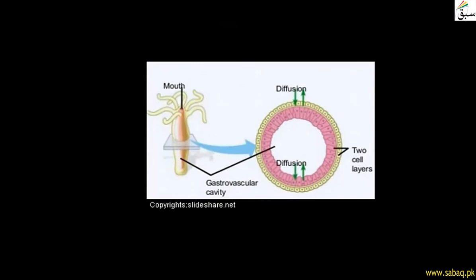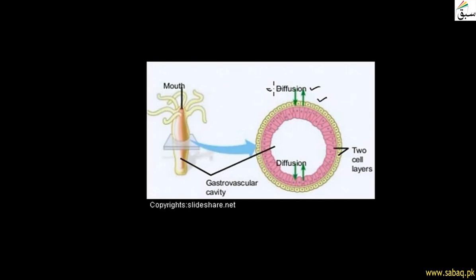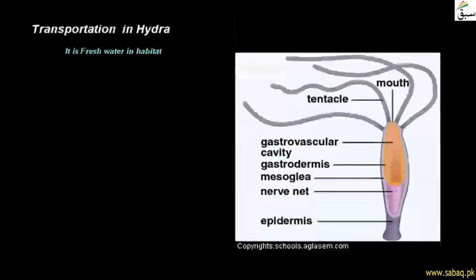Through diffusion, nutrients are distributed to other cells as well. Oxygen and other gases flow from higher concentration to lower concentration. Because hydra's surface area is large, this diffusion process works efficiently. This is how transportation in hydra is carried out.